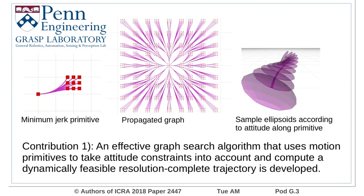The first contribution of our work is an effective graph search algorithm that uses motion primitives to take attitude constraints into account and compute a dynamically feasible and resolution-complete trajectory.